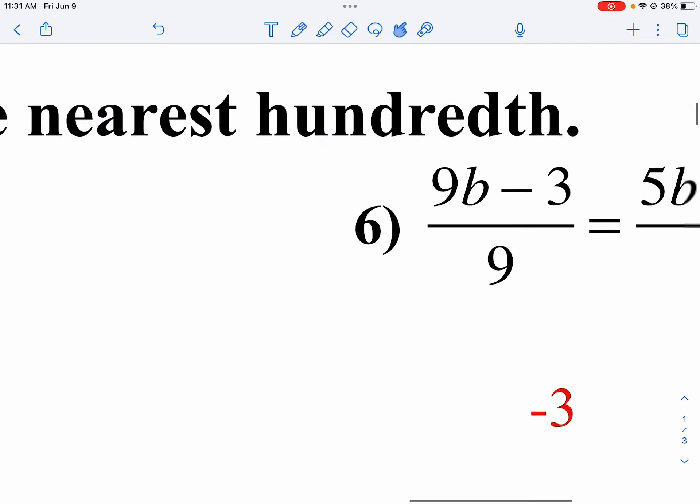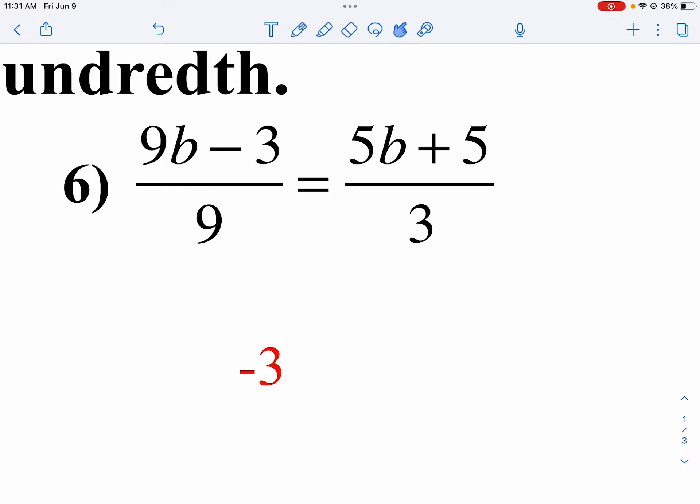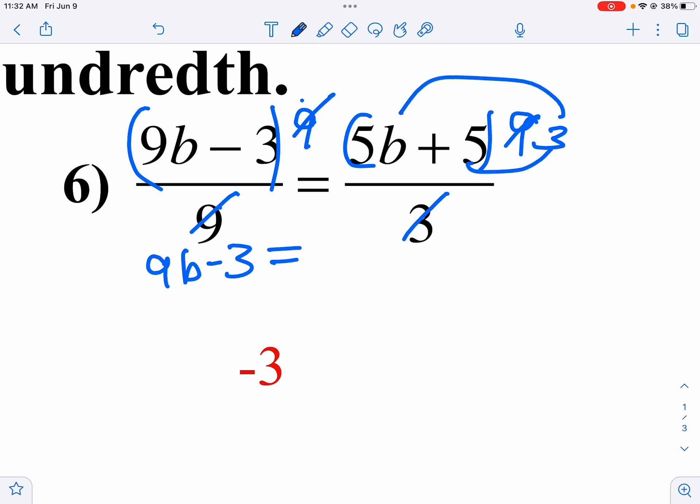Taking a look at number 6 here. I've got B's on both sides and fractions on both sides. So I'm going to do what I did back in the previous lesson. I'm going to clear my fractions. The common denominator between 9 and 3 is 9. I'm going to multiply both sides by 9. The 9 is reduced on the left-hand side, so I just write 9B minus 3. Here, 3 goes into 9 three times. So I distribute the 3 in my parentheses. 3 times 5B is 15B plus 15.